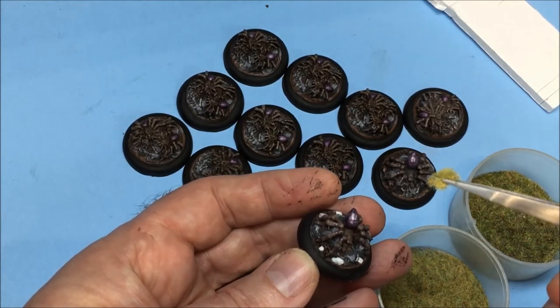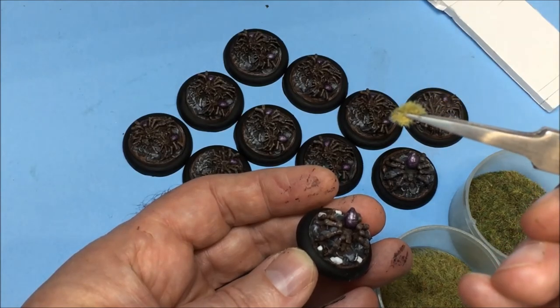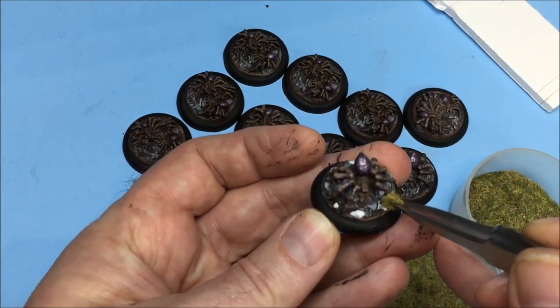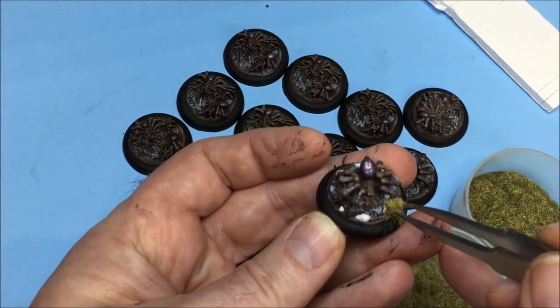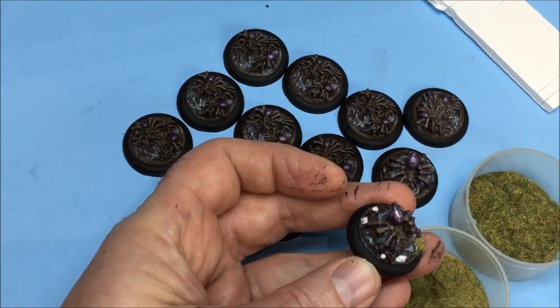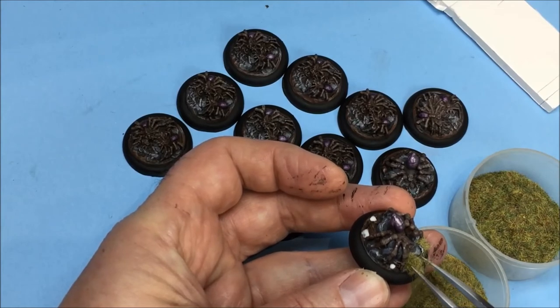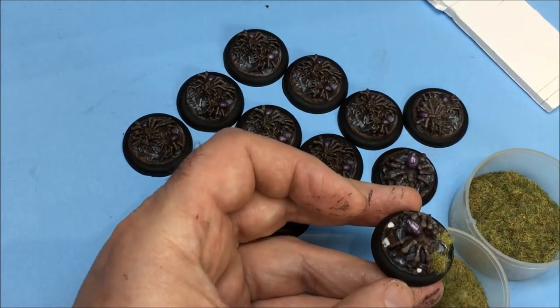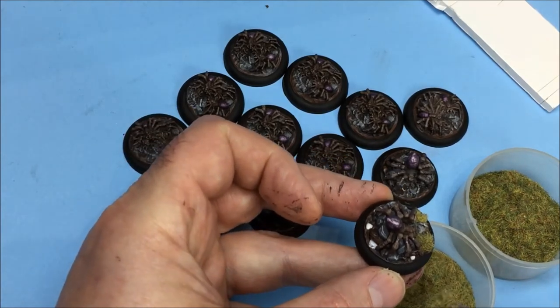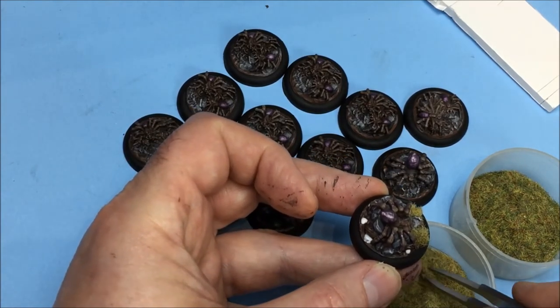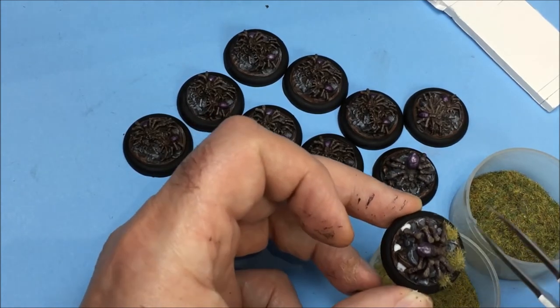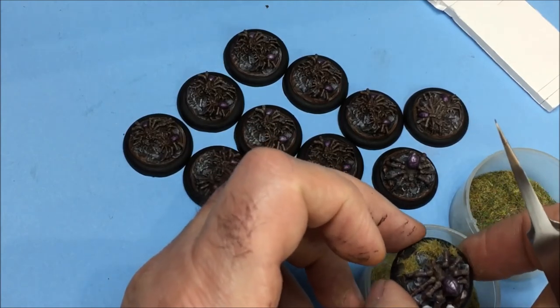And you'll see you've got strands sticking down the way. Put that directly into the PVA and if you've got any excess just tap it away. And I'll do the same on that bit. I'm keeping the base over the container of static grass because all the excess will just drop straight back into the pot. And work my way around the base.